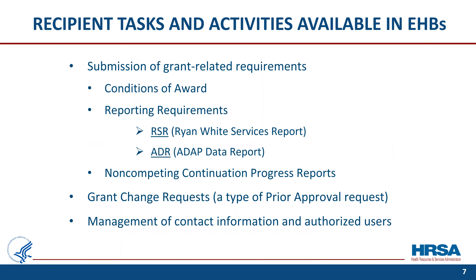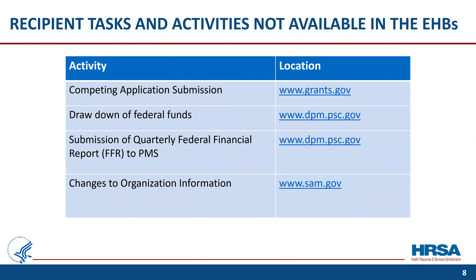Here are some recipient tasks and activities available in the EHBs. Recipients use the EHBs to submit grant-related requirements such as conditions of award, reporting requirements like the RSR and ADR, and non-competing continuation progress reports. They can also submit grant change requests, which is a type of prior approval request, and manage grant contact information and user access and privileges. Some tasks not available in the EHBs include competing application submissions, drawdown of federal funds, submission of quarterly federal financial reports (FFRs) to PMS, or changes to organization information. For those items, please go to the location listed on the chart.